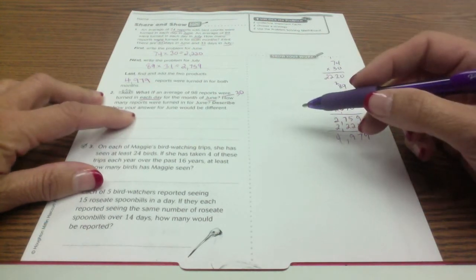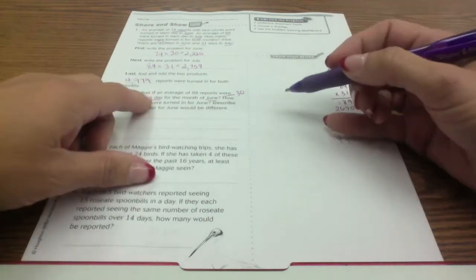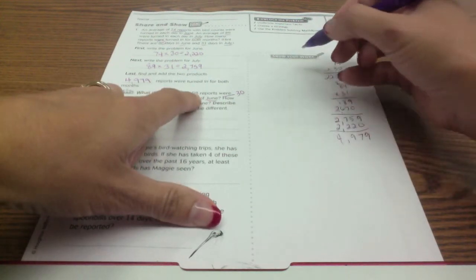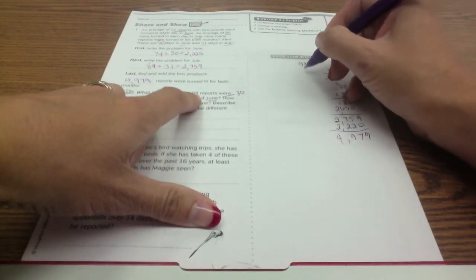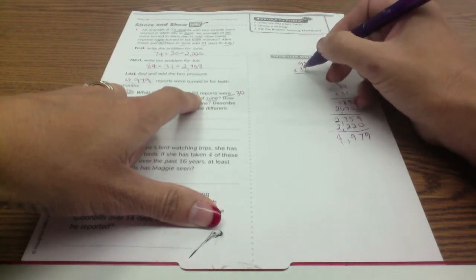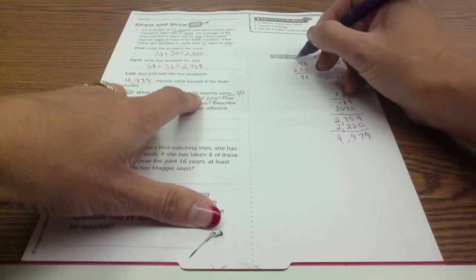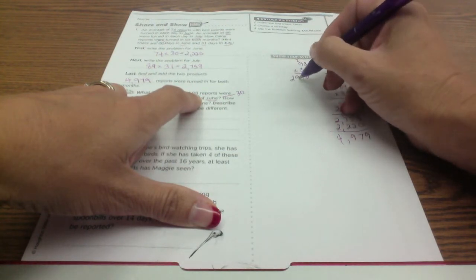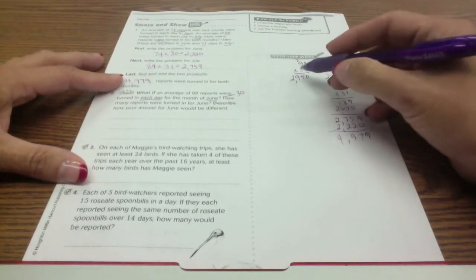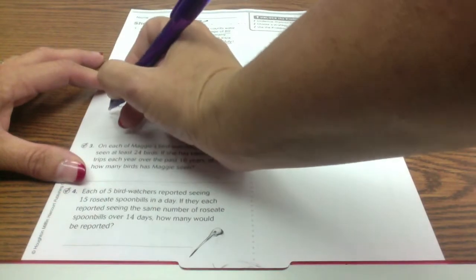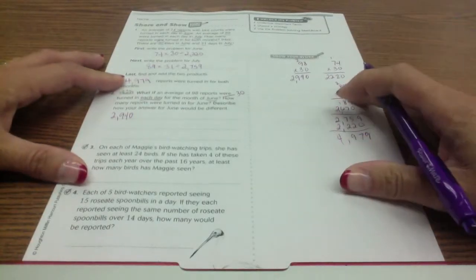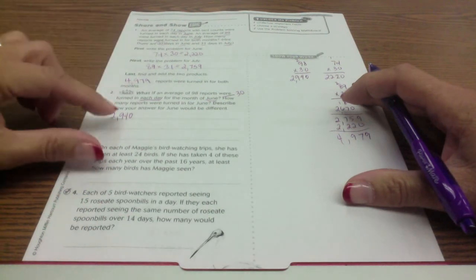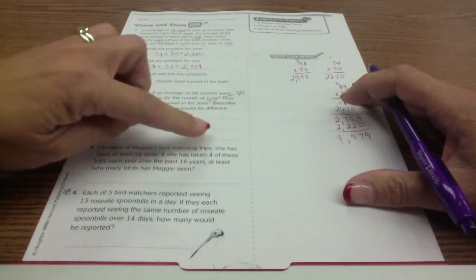So what if the average reports were 98 times 30? 30 times 8 is 240, 3 times 9 is 27, 28, 29. So that tells you how many would be turned in for June if the average reports were 98. And then it says describe how your answer for June would be different. So in this case it was 74 for June, in this case it's 98 for June, so you would explain why that's different.